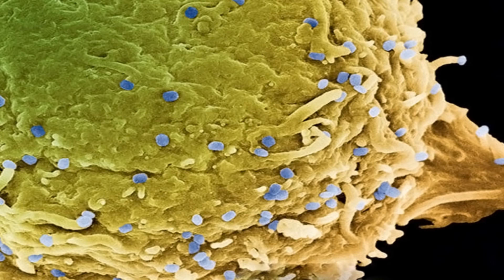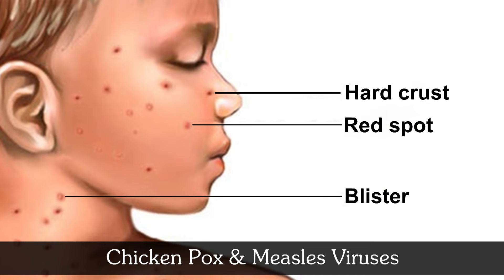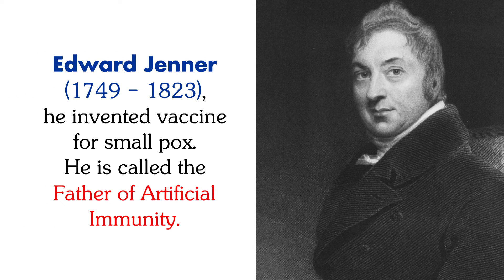The vaccine gives protection both by humoral and cell-mediated immunity. Other pox viruses are chicken pox and measles viruses. Edward Jenner, from 1749 to 1823, invented a vaccine for smallpox and is called the father of artificial immunity.